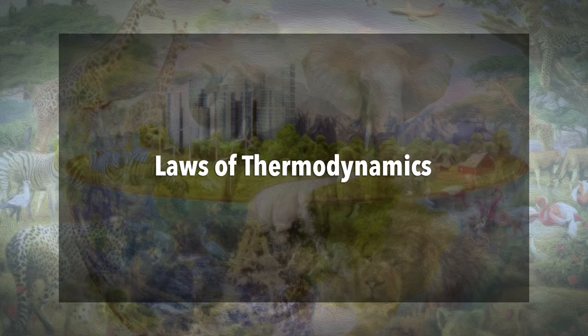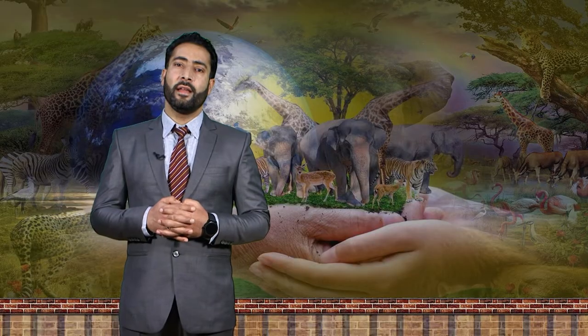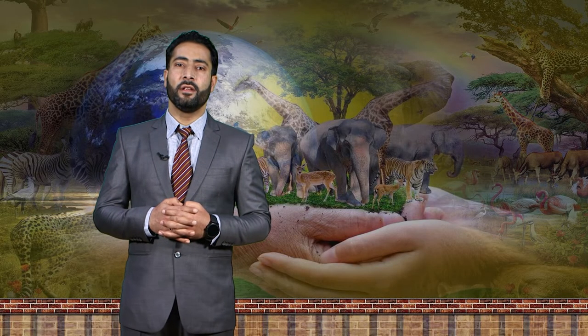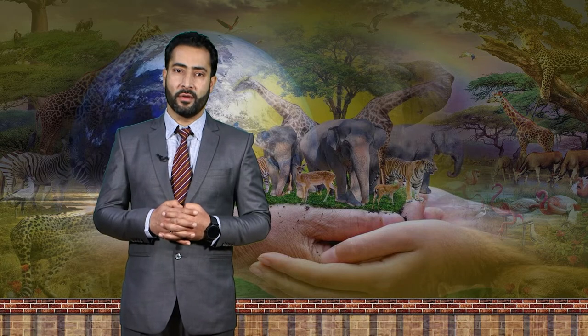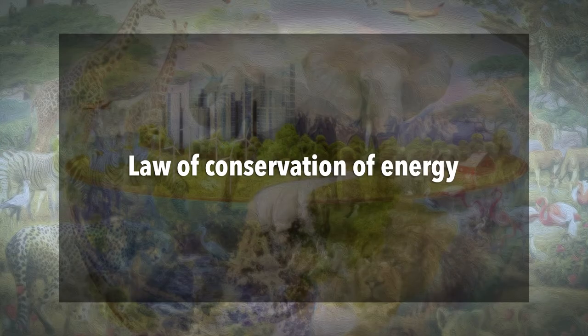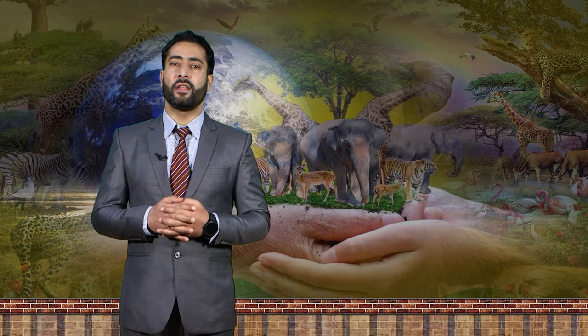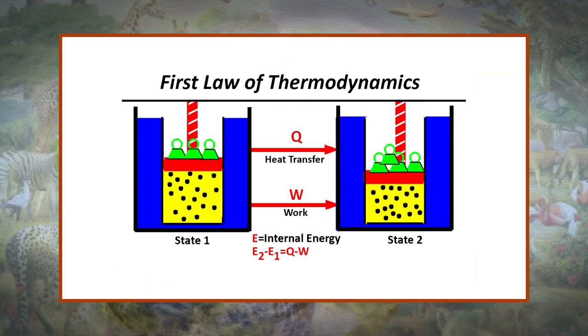Now the laws of thermodynamics. The expenditure and storage of energy is described by two laws of thermodynamics. The first law is the law of conservation of energy, which states that energy is neither created nor destroyed. It may change forms, pass from one place to another, or act upon matter in various ways. In this process, no gain or loss in total energy occurs — energy is simply transferred from one form or place to another.